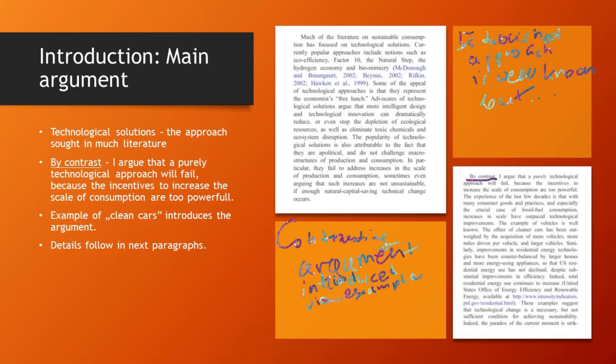When you look into the details of her argument further on, she makes another nice stylistic move: she first talks about what the literature mostly deals with, which is technological solutions to environmental issues. Then in the next paragraph she says, 'by contrast, I argue that a purely technological approach will fail' — and then explains why. This is nice because she starts with something well established, things people are familiar with, and then says, 'but I am actually trying to do this.' There is common ground as her point of departure.